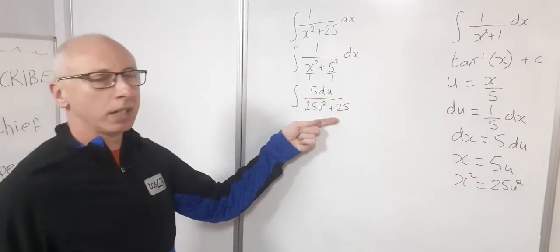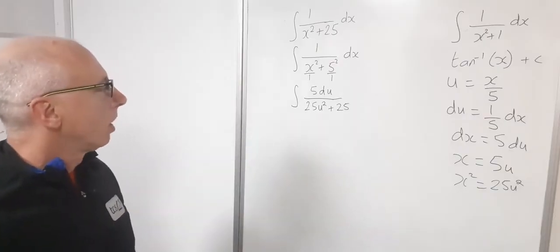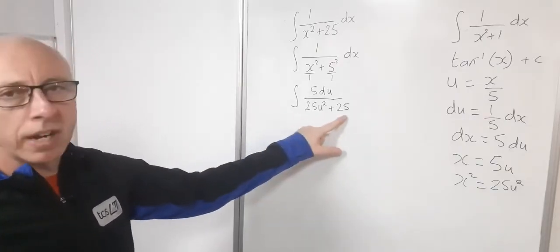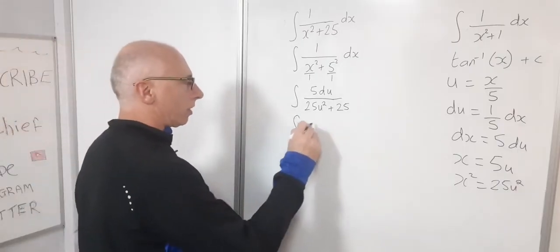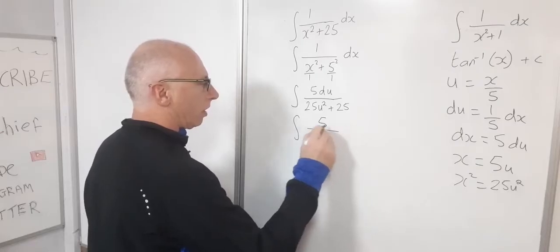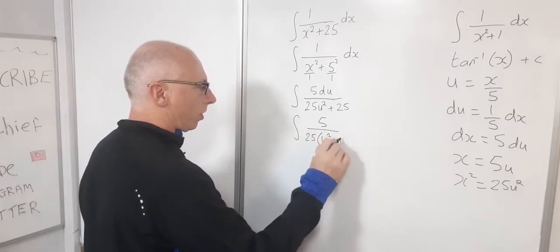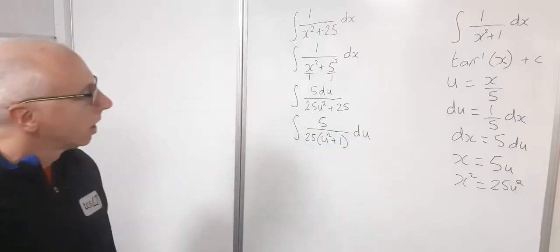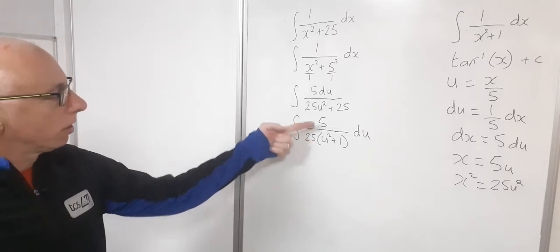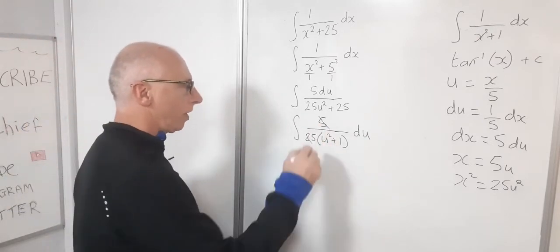Okay, so that's my integrand there all converted into the u. Right, let's factor out 25 in this denominator. So 5 over 25 times u squared plus 1. And then my du now I can put out here. So you can see what's going to happen here now. 5 over 25. That's just 1 fifth. So that becomes 1 fifth.